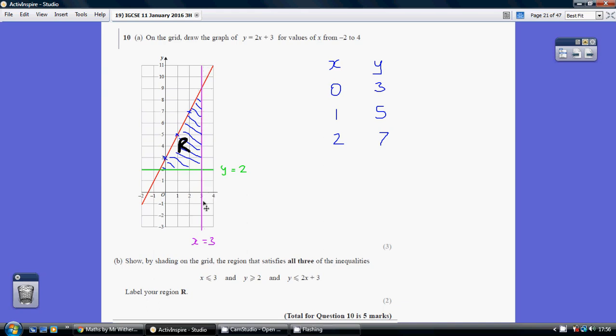Every single point on this line would have the x coordinate of 3. So 3, 0; 3, 1; 3, 2; 3, 3; 3, 4, and so on. This line is x equals 3. Equally, this green line is y equals 2.